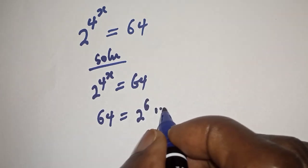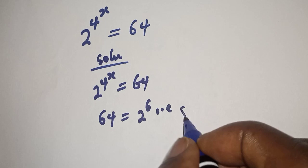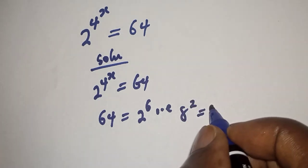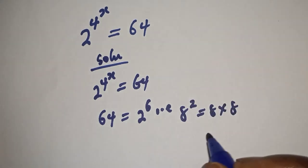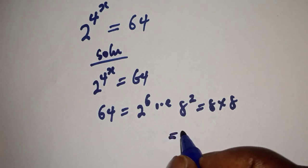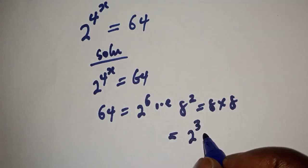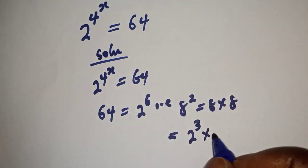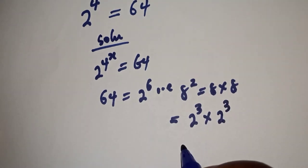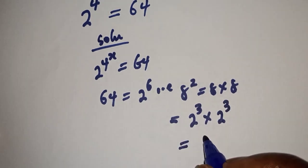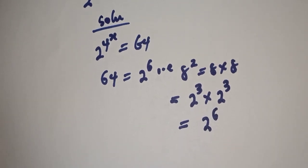That is, 64 is 8 squared. This is equal to 8 times 8, and this is equal to 2 raised to power 3 multiplied by 2 raised to power 3, which is equal to 2 raised to power 6.